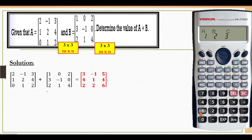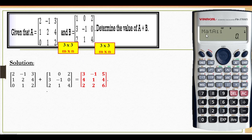Press number 1 for matrix A. Matrix A, the order is 3 times 3, so M is 3. Equal to, then N — the column of the matrix — is 3. Okay, then insert element 1,1 is 2. Element 1,2 is negative 1. Element 1,3 is 3.